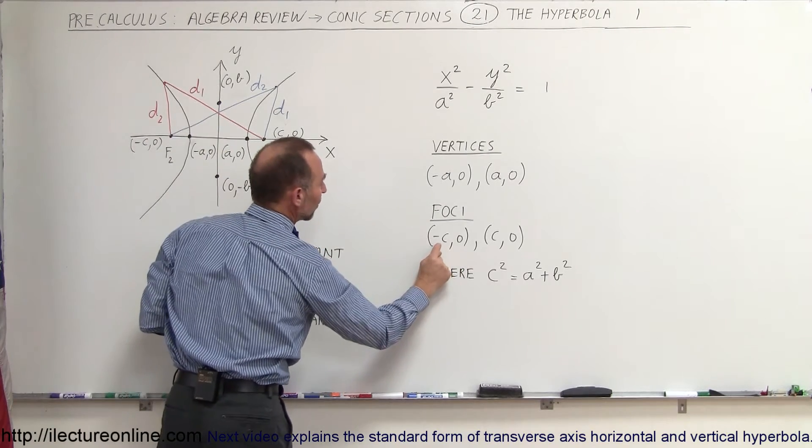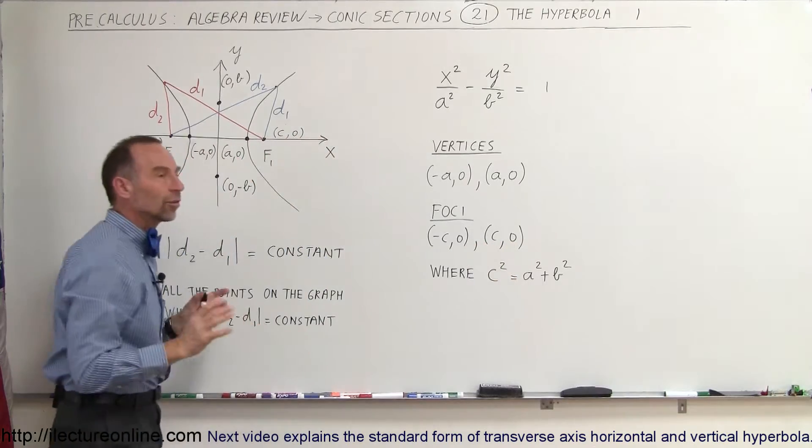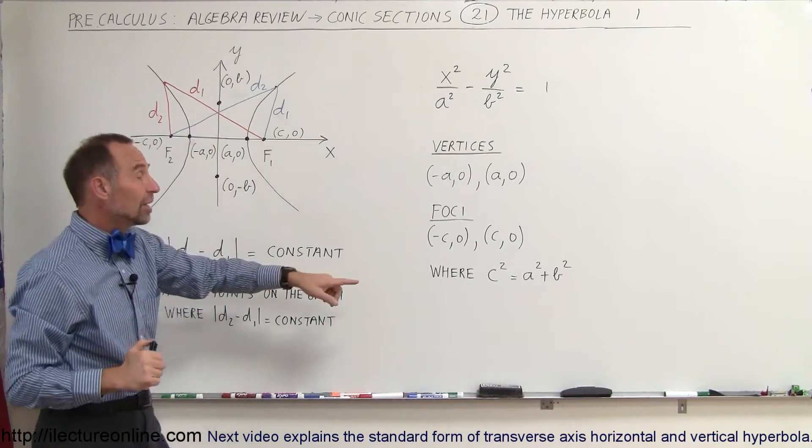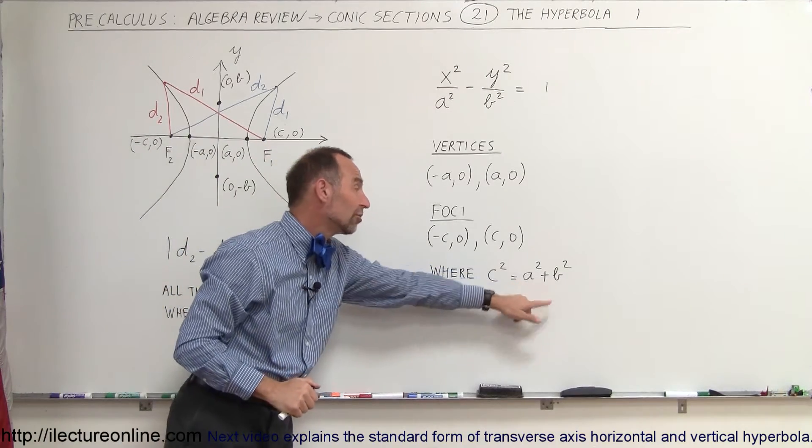And you can see that it's going to be (-c,0), (c,0) on the other side, so that's on the x-axis. And the determination of c is here where c² must equal a² + b².